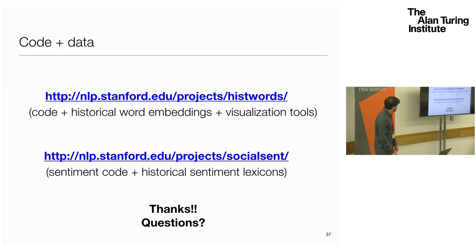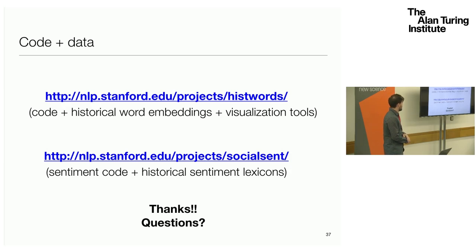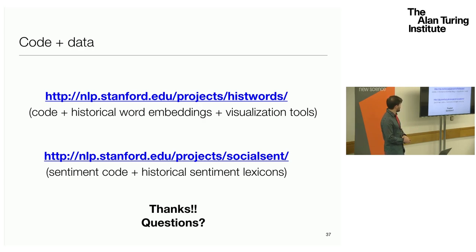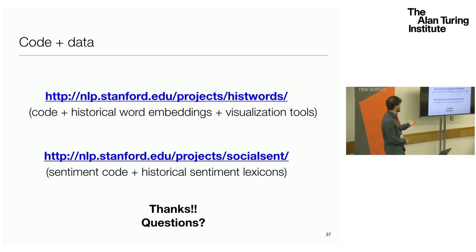That summarizes the current preliminary work. Most of this work, besides the work on measuring semantic and sentiment change, is still in progress and somewhat preliminary, so comments and feedback are really appreciated. There is code available both for the historical word embeddings, for visualizing them, for historical sentiment, and also some induced historical sentiment lexicons, which is available at the provided URLs. Thanks.